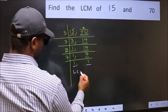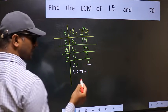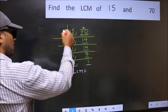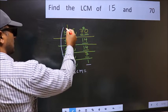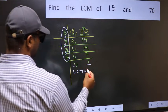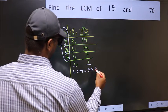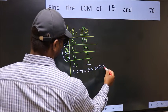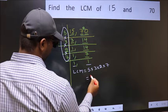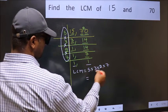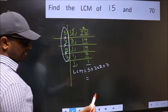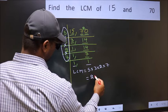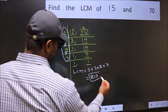So our LCM is the product of these numbers. That is 5 into 3 into 2 into 7. When we multiply these numbers, we get 210 is our LCM.